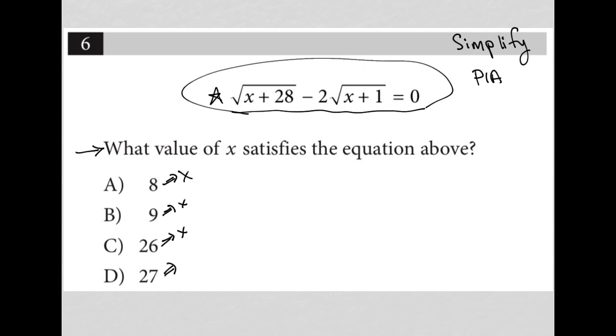Let's start off with simplification. So I have square root x plus 28 minus 2 root x plus 1 equals 0. What I would do here is add 2 root x plus 1 to both sides, which would lead me to having x plus 28 under the radical equals 2 radical x plus 1.